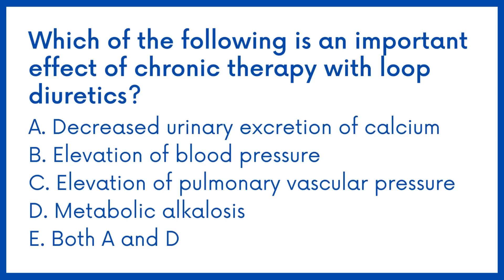Which of the following is an important effect of chronic therapy with loop diuretics? Option A: Decreased urinary excretion of calcium. Option B: Elevation of blood pressure. Option C: Elevation of pulmonary vascular pressure. Option D: Metabolic alkalosis. Option E: Both A and D.